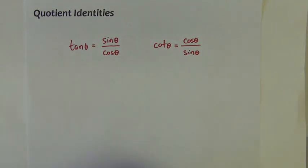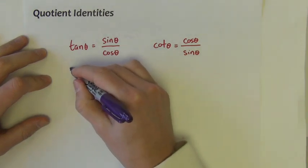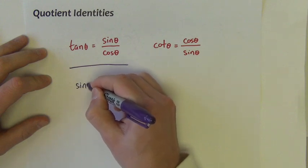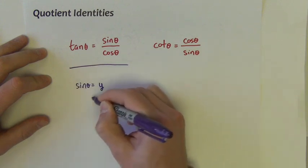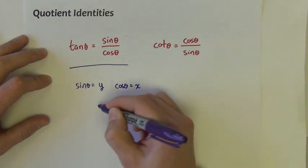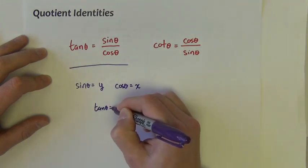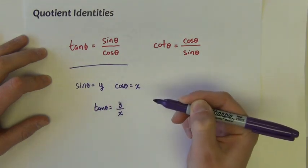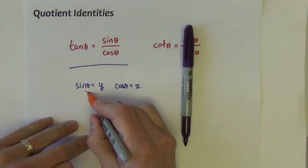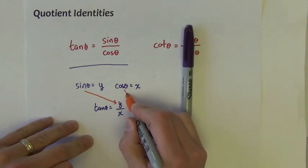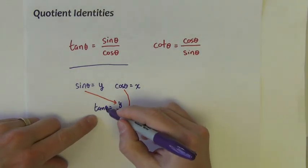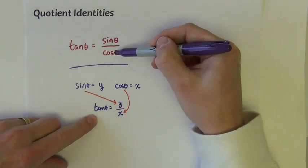Let's think about the first quotient identity. In our unit circle, we know that the sine of theta is equal to the y-coordinate, the cosine of theta is equal to the x-coordinate, and the tangent of theta is defined to be the y divided by the x coordinate. So if sine is the y value and cosine is the x value, it follows that tangent can be re-described as sine divided by cosine.